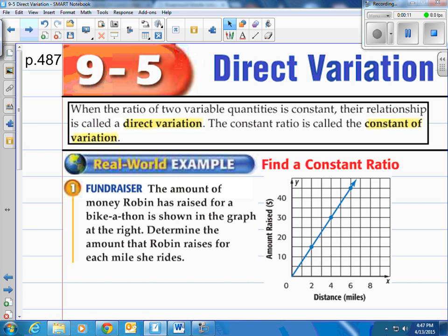Direct variation. When the ratio of two variable quantities is constant, their relationship is called a direct variation. The constant ratio is called the constant of variation.